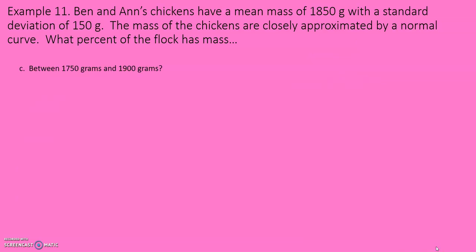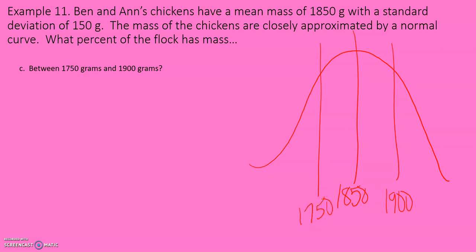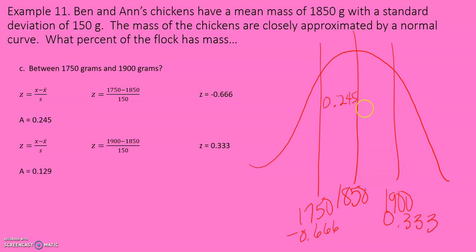What percent of the flock has mass between 1,750 grams and 1,900 grams? Again, draw the picture. We need to find the Z-scores for 1,750 and 1,900 and find their A-values. For 1,750, the Z-score is negative 0.666, which gives us an A-value of 0.245. The Z-value for 1,900 is 0.333, which is the A-value of 0.129. We need to add them together to get the total, which is 0.374. Just 37.4% of the flock has mass between 1,750 grams and 1,900 grams.